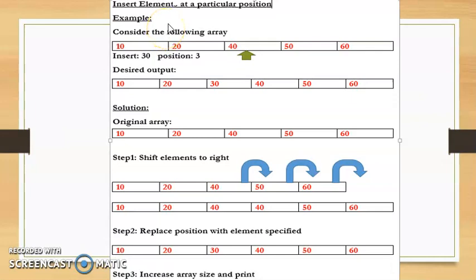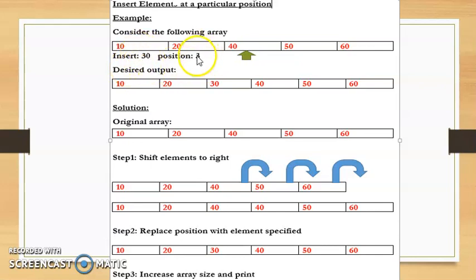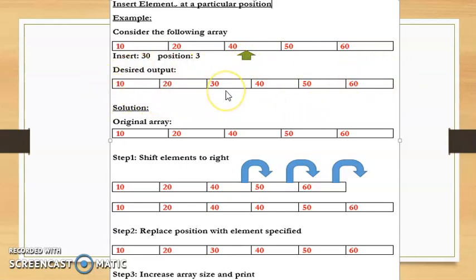We will see how to insert an element at a particular position. Before explaining the code, I'll explain the logic with the help of an example. Consider an array with elements 10, 20, 40, 50, and 60. Say the user wants to insert element 30 at position 3, meaning 30 should be inserted at the third position. So the output we should get is 10, 20, 30, 40, 50, and 60.